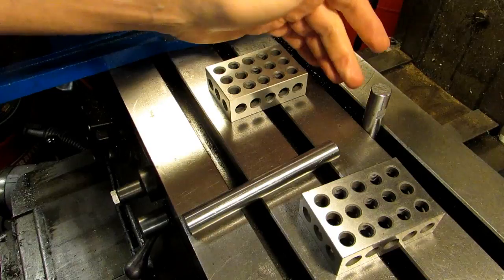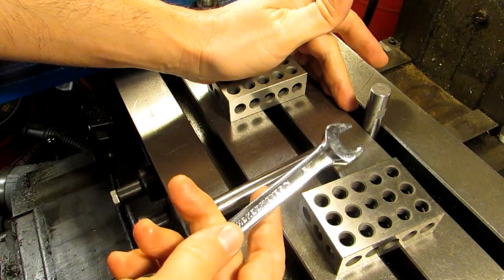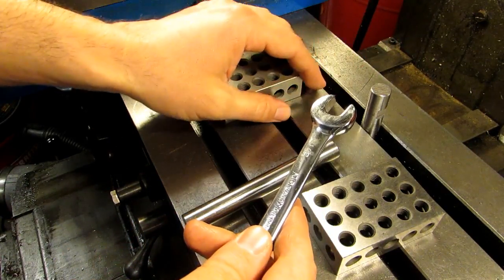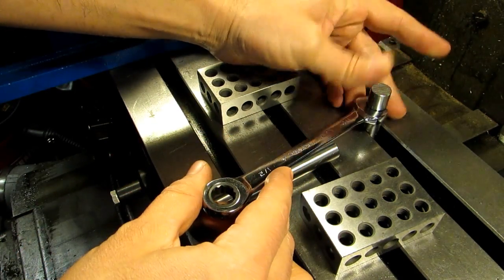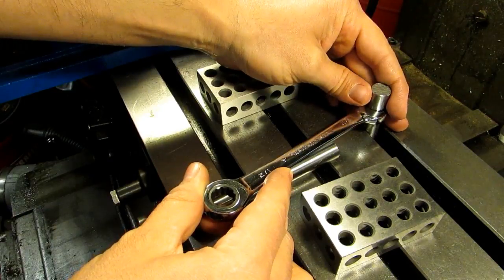My dimensions are based off of the depth of the T-slot and the width of the wrench, plus a bit for clearance, and I put the wrench flats in the middle of the part so they don't potentially interfere with the location of my part.